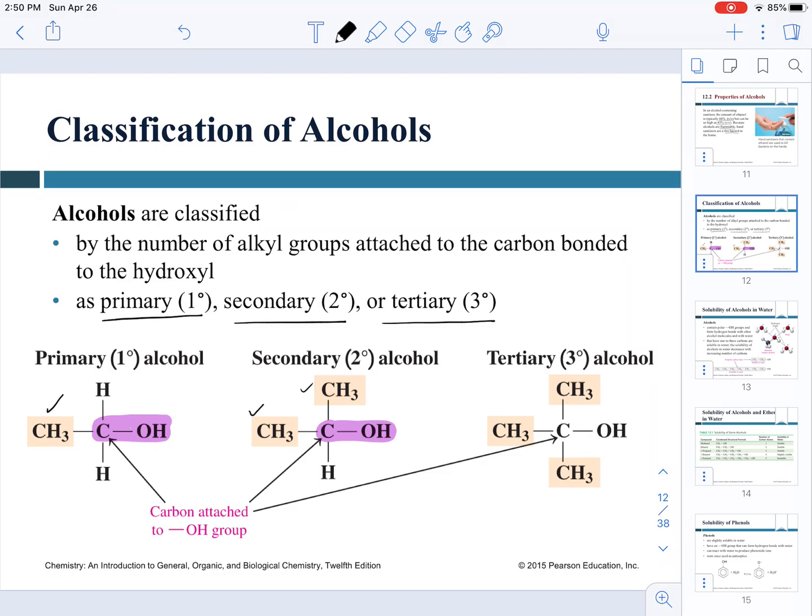They don't need to be methyl groups, they just need to be carbon atoms that contain hydrogens. If we have a carbon atom that is bonded to OH and is bonded to three carbon atoms, that's known as a tertiary alcohol. This classification is important because we're going to utilize it when we talk about reactions in this chapter.